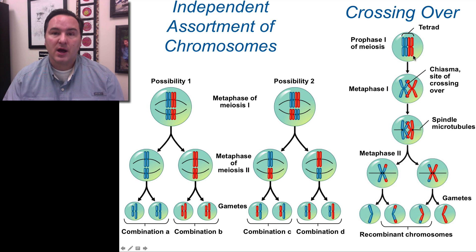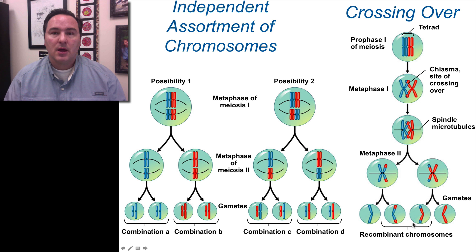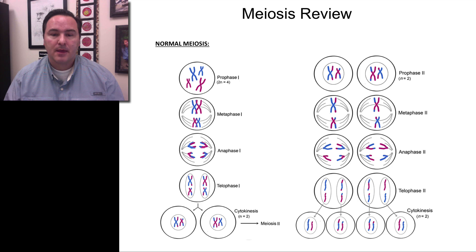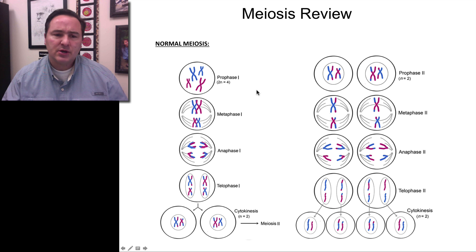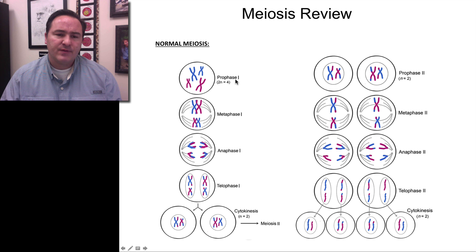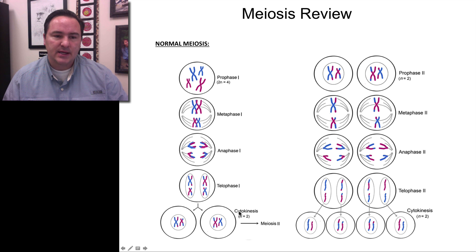We also refer to crossing over, which can also lead to more recombinant combinations in the chromosomes, so more gametic possibilities as well. And I want to just show this diagram of meiosis to remind you that the names of the phases are prophase, metaphase, anaphase, and telophase, and then cytokinesis.